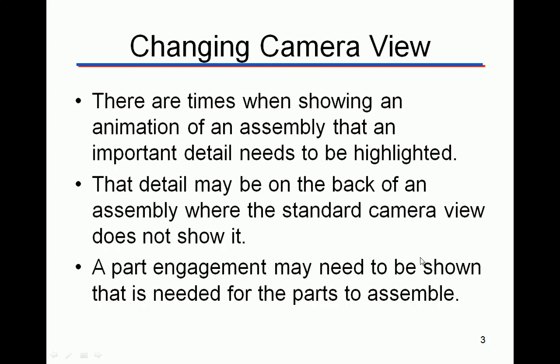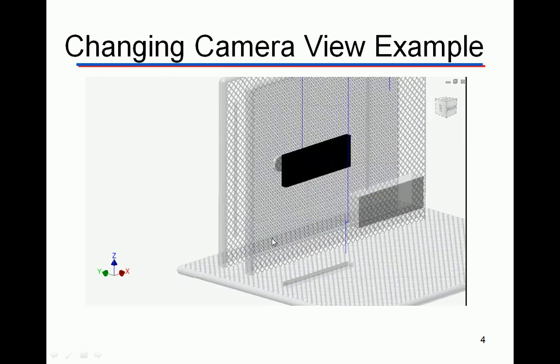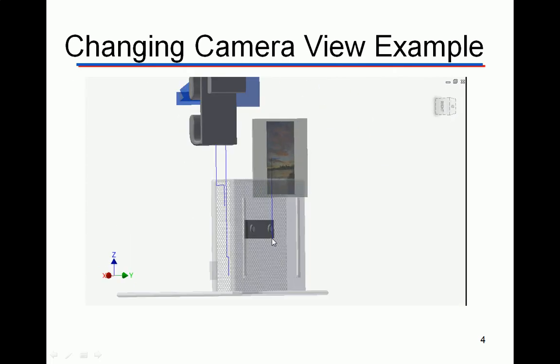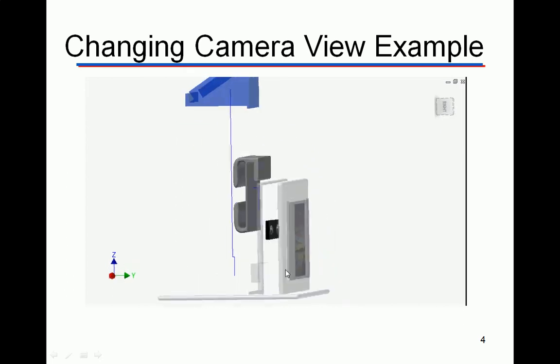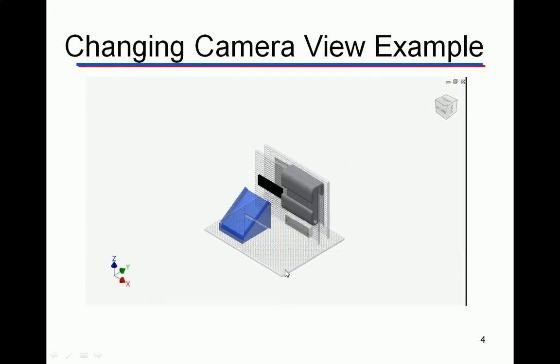The reason we're doing this is that sometimes an animation of an assembly lacks an important detail that needs to be highlighted. If you just use a standard isometric view, you won't necessarily show that detail — it may be on the back of the part or there could be an engagement that needs to be shown. Here's an example from the desktop organizer project: I change the view and it shows exactly the engagement, where the lines are with the tweaks, and at the end I go back out and show the complete assembly all together.